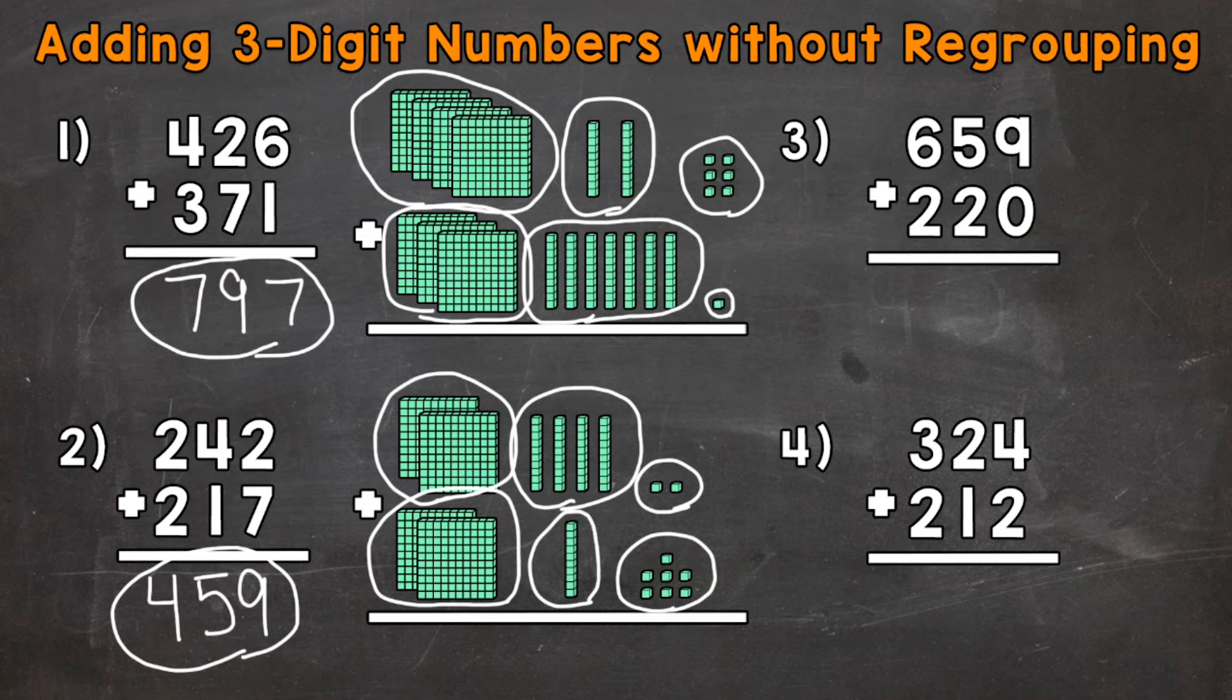Let's move on to numbers 3 and 4, and we're not going to use any base 10 blocks for these problems. We'll start with number 3, where we have 659 plus 220. Always start with the ones. So we have 9 plus 0. That's going to give us 9.